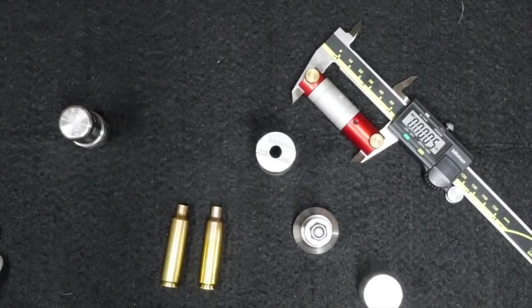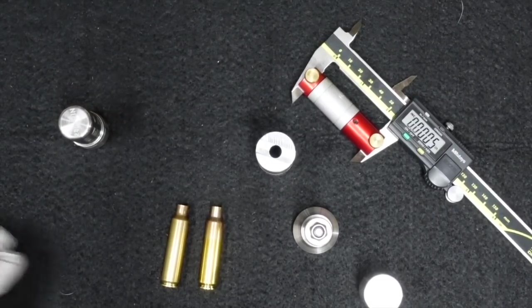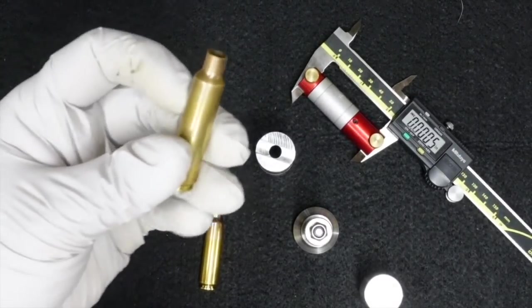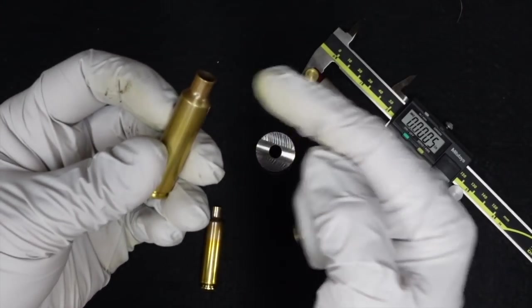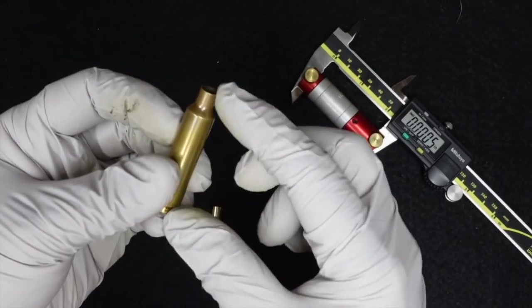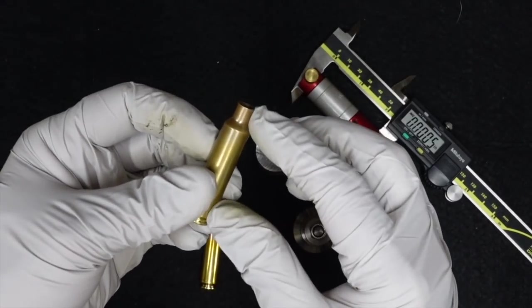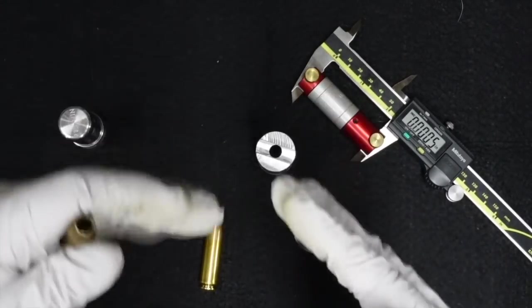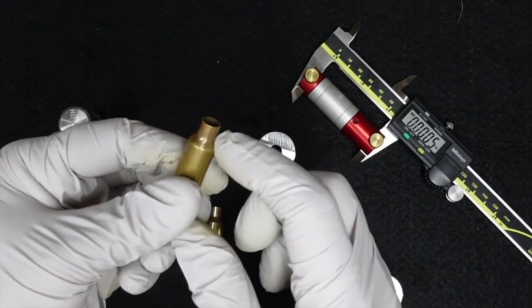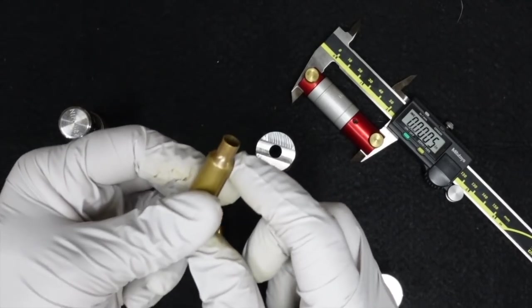Let's talk about measuring our shoulder bump back. Shoulder bump is how much our die is pushing the shoulders back. This isn't neck sizing or full length sizing. We're strictly talking about the actual shoulders that go forward into the chamber, and we need to make sure that when we're reloading we move these back a little bit.